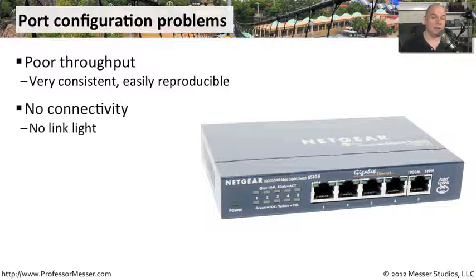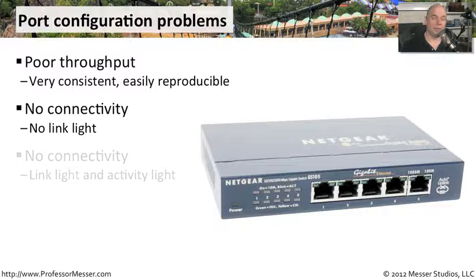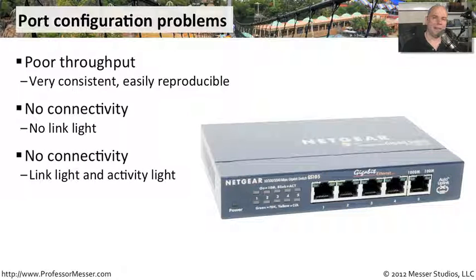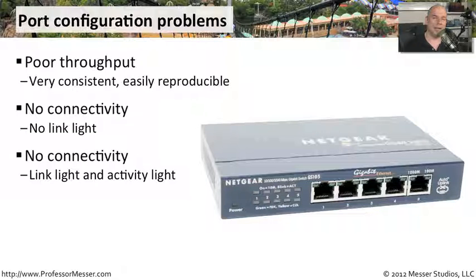If the configuration issue is extreme, we may not get any connectivity at all. We plug into the network or device and get no link lights, no connectivity at all. Sometimes we get a link light but no connectivity, which tells us at least some signal is getting through the cable, but something about the configuration on one end or the other isn't right — we may see activity lights but still can't get any connectivity through the network.